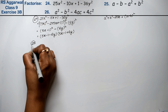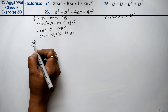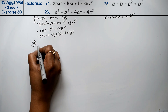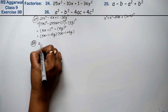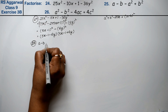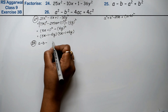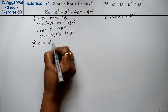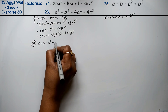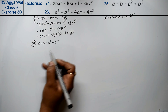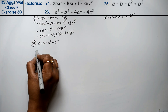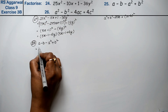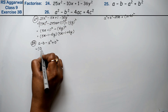Let's do question number 25. Question 25 is: a minus b minus a² plus b². We look at this expression and group it as (a - b) in one bracket.